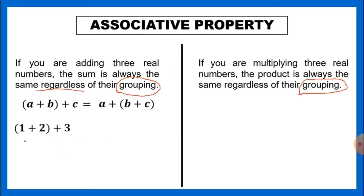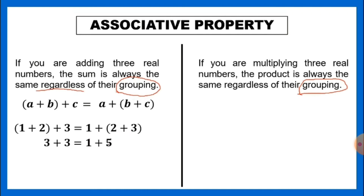For example: the quantity (1 plus 2) plus 3 equals 1 plus the quantity (2 plus 3). Here 1 and 2 are in the group and 3 is outside; then we change so 1 is outside and 2 and 3 are inside. First we add 1 plus 2 to get 3, then 3 plus 3 equals 6. On the other side, 2 plus 3 is 5, then 1 plus 5 is also 6. Still the same result.